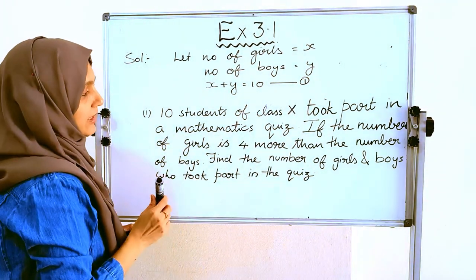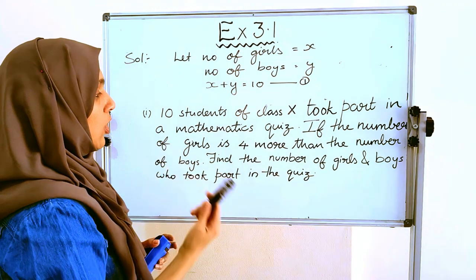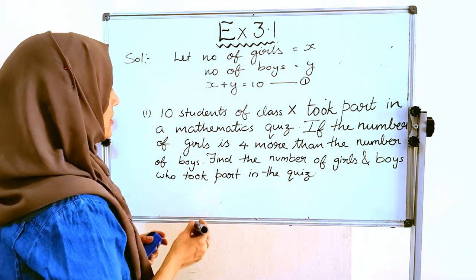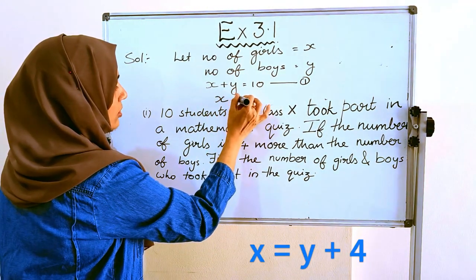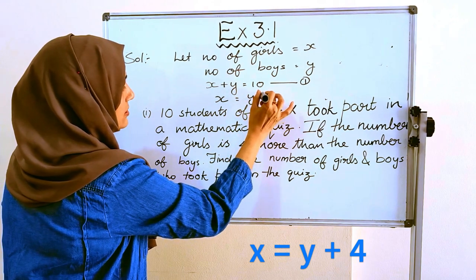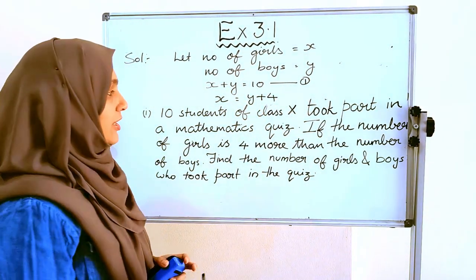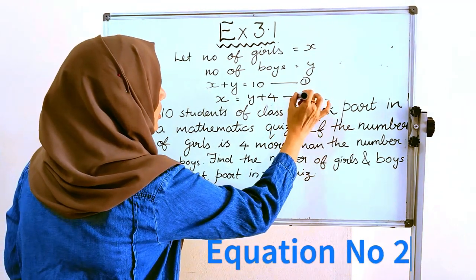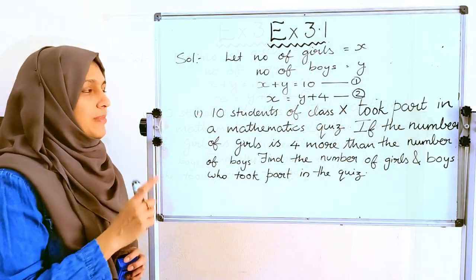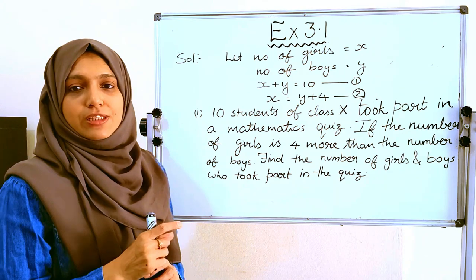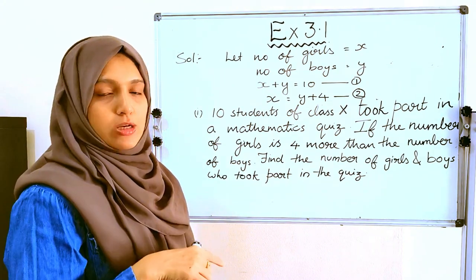The second condition is that the number of girls is 4 more than the number of boys. That is, x equals y plus 4. This is our second condition, Equation 2. Based on these equations, let us find the values of x and y and make a table.